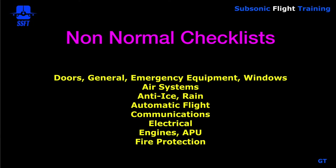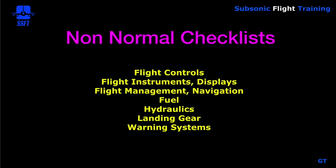The non-normal checklists include all systems in alphabetical order, starting with doors, general emergency equipment and windows, air systems, anti-ice and rain, automatic flight, communications, electrical, engines, APU, fire protection, flight controls, flight instruments, displays, flight management, navigation, fuel, hydraulics, landing gear, and warning systems. These are all numbered, tabbed sections within the QRH.